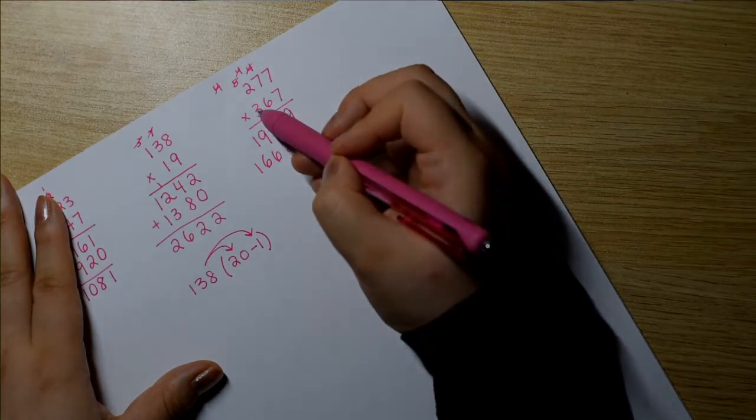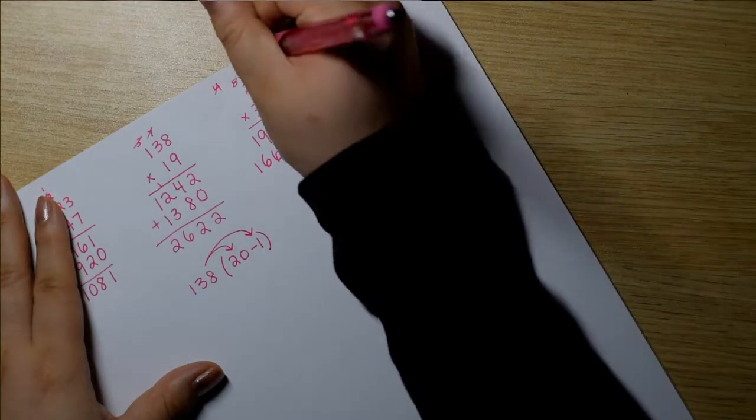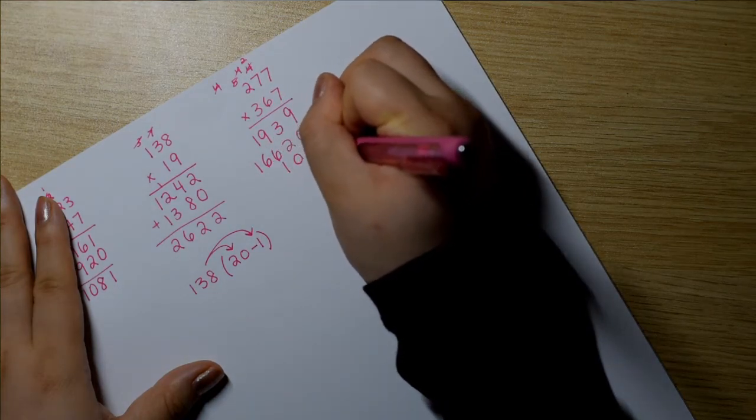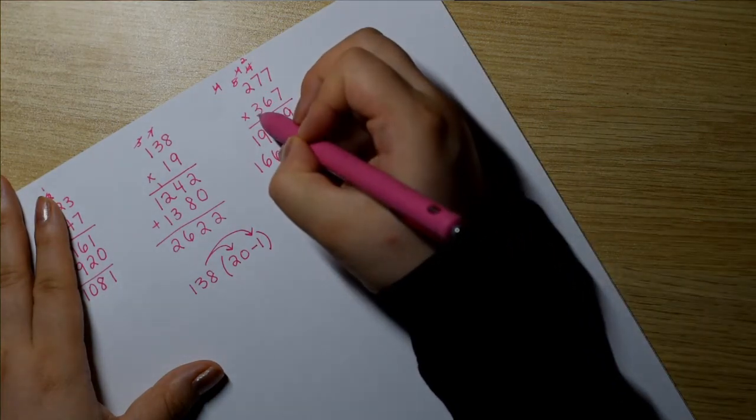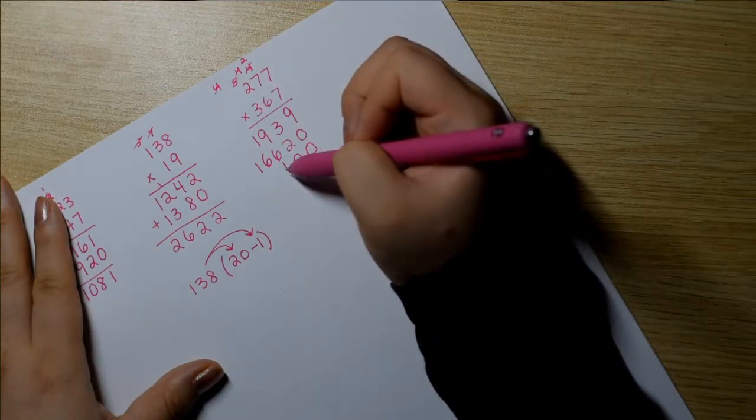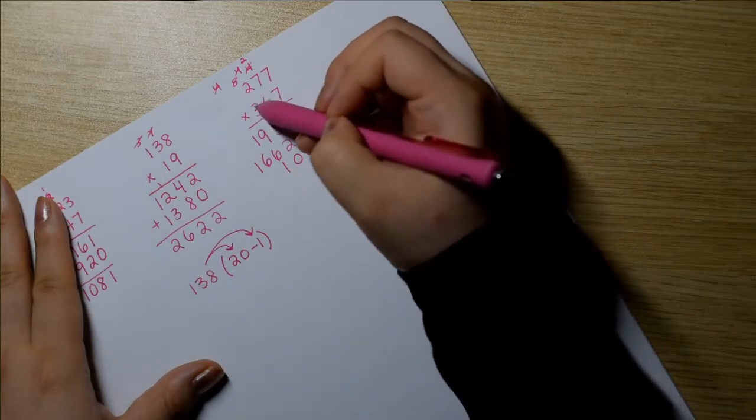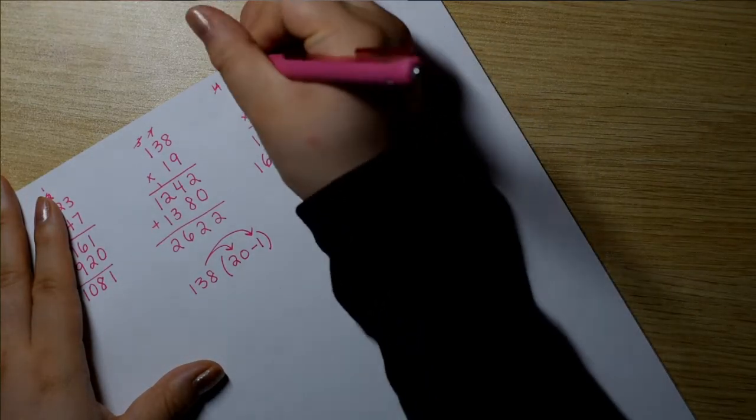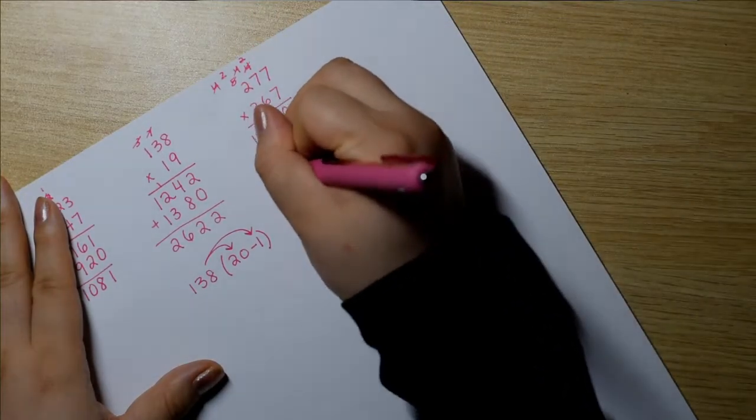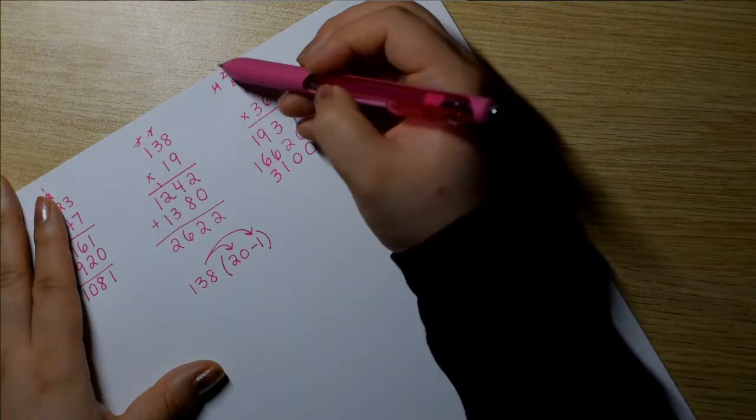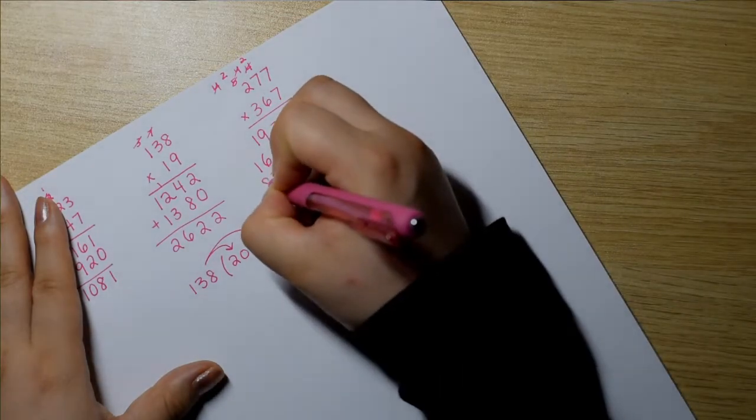Move on to 3. 3 times 7 is 21. But now we have to put in 2 zeros because this 3 is actually 300. So 3 times 7 is 21. 0, 0. 3 times 7 again is 21. Plus my 2 is 23. 3 times 2 is 6. Plus 2 is 8. Very nice.